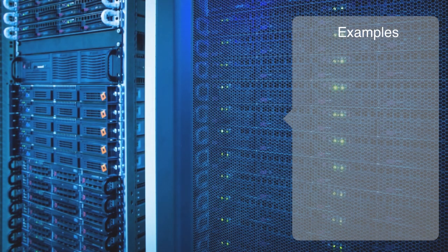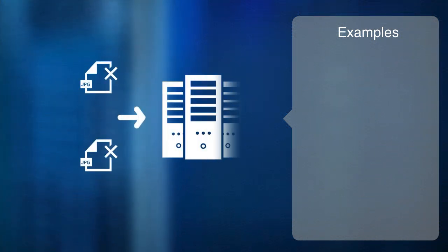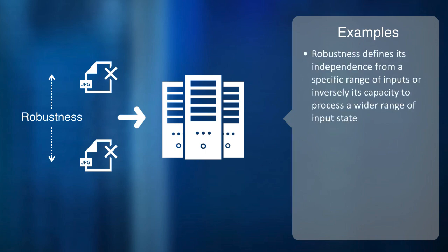For example, in computer science, robustness is the ability of a computer to cope with errors during execution, that is to say, the ability of an algorithm to continue operating despite abnormalities in input. In this way, robustness defines its independence from a specific range of inputs or, inversely, its capacity to process a wider range of input states.